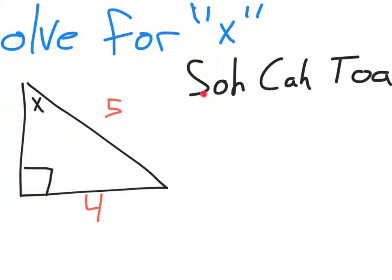These abbreviations mean you can use sine if you're working with the opposite and the hypotenuse, cosine if you're working with the adjacent and the hypotenuse, and tangent if you're working with the opposite and the adjacent.